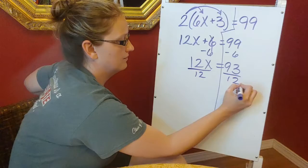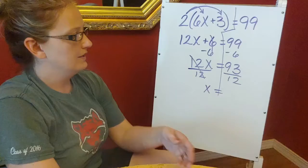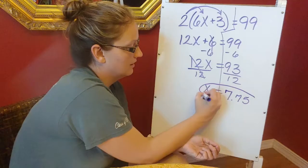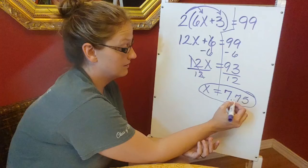Get 12x equals 93. Now I still have to get that x by itself, so I'm going to divide both sides by 12. And whenever you type that into your calculator, 93 divided by 12, you're going to get a decimal. You get 7.75 as your answer. Don't let that freak you out. It's okay to get decimals.